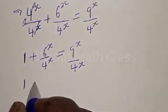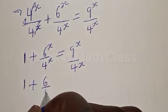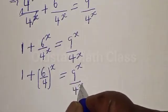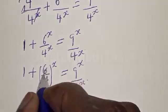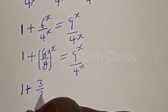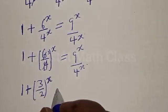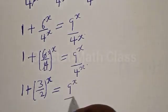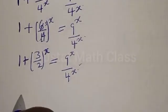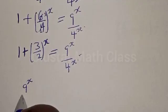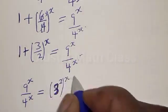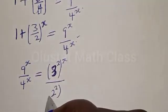We have 1 plus (6 over 4) raised to power x equal to 9^x divided by 4^x. Simplifying 6/4, we get 3/2, so we have 1 plus (3 over 2) raised to power x. The right-hand side, 9^x divided by 4^x, can be expressed as (3 squared) raised to power x divided by (2 squared) raised to power x.